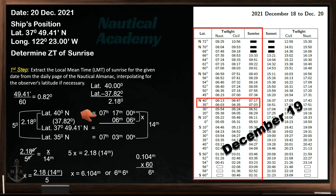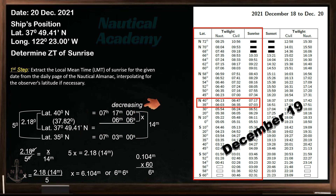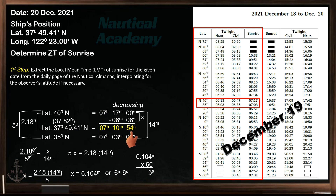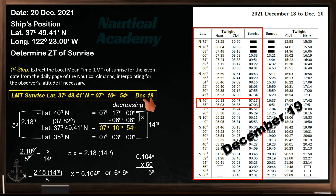We need to determine whether to subtract or add x. Looking at the time of sunrise at latitude 40 degrees going down to latitude 35 degrees north, the time of sunrise is decreasing, so our unknown will be subtracted. The local mean time of sunrise at latitude 37.82 degrees is 07 hours 10 minutes 54 seconds. This local mean time of sunrise is on 19th of December, not 20th of December, since 19th is the middle day of this daily page.